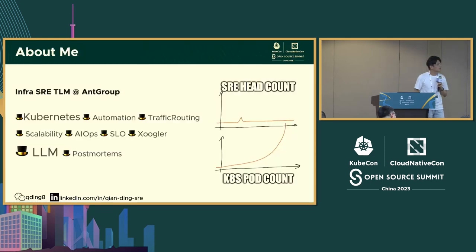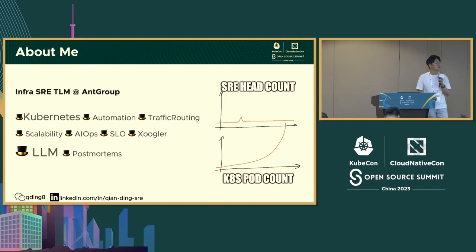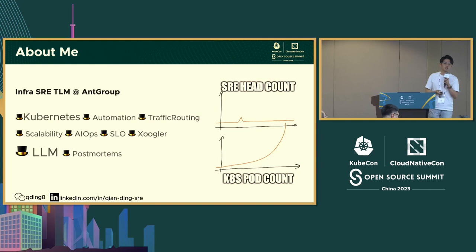A little introduction about me. I started my career at Google as an SRE. In 2019, I moved to Ant Group to become a tech lead and manager for the infrastructure SRE team. I'm focused on Kubernetes and other cloud-native solutions at Ant Group.